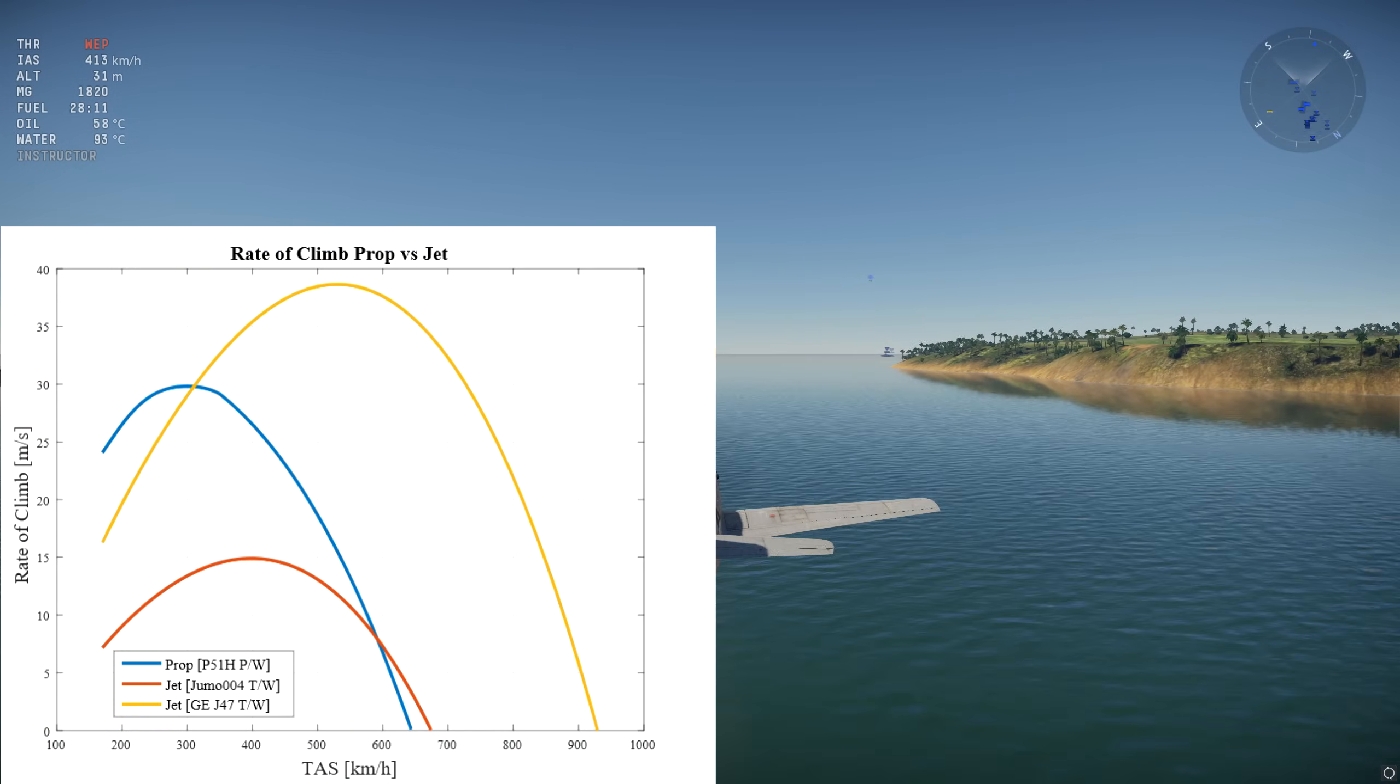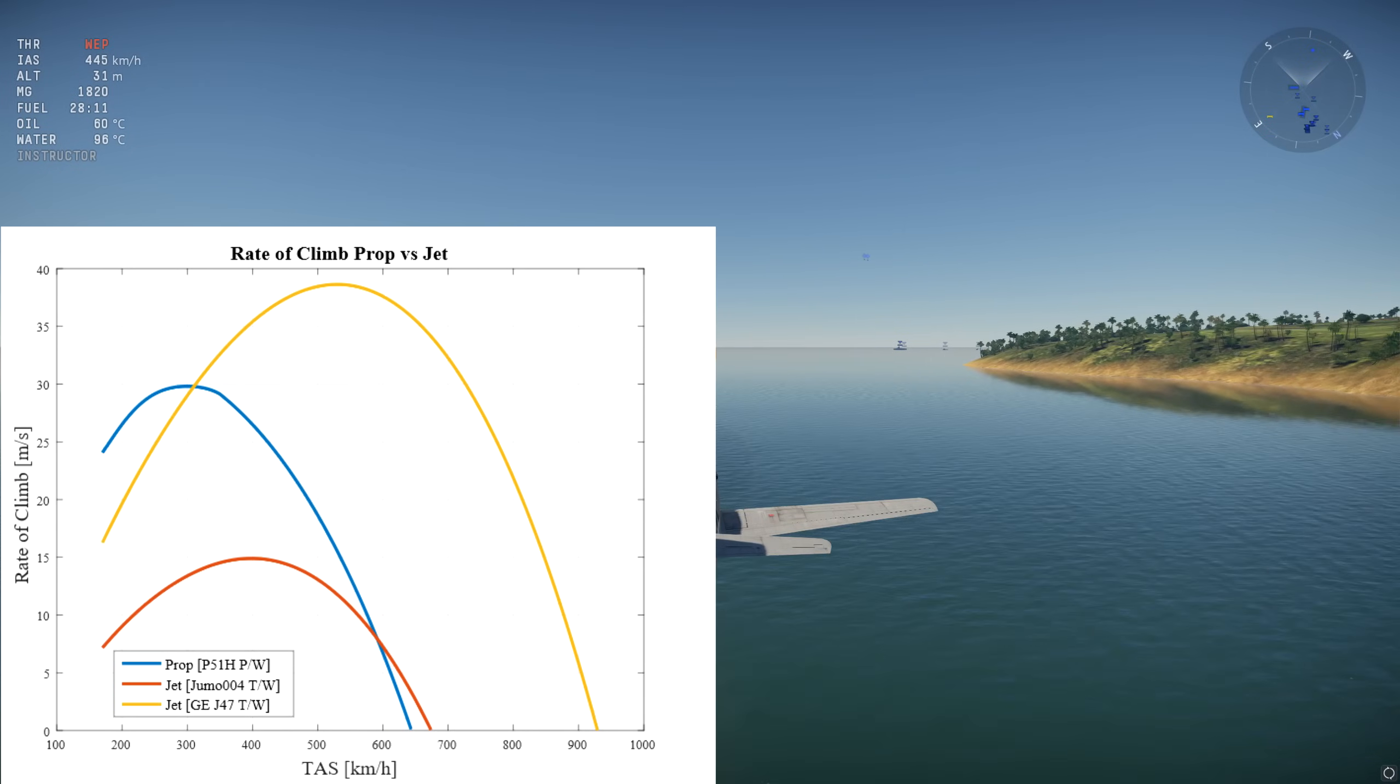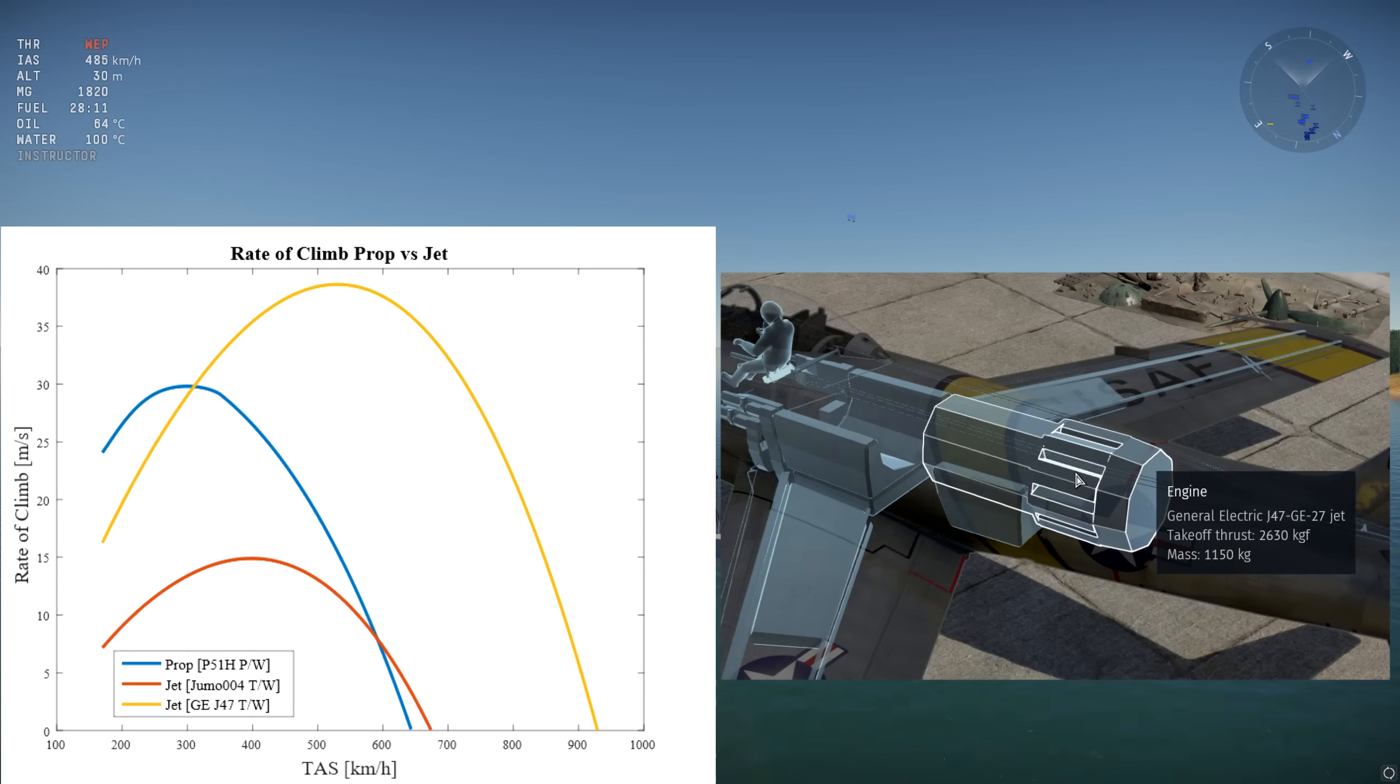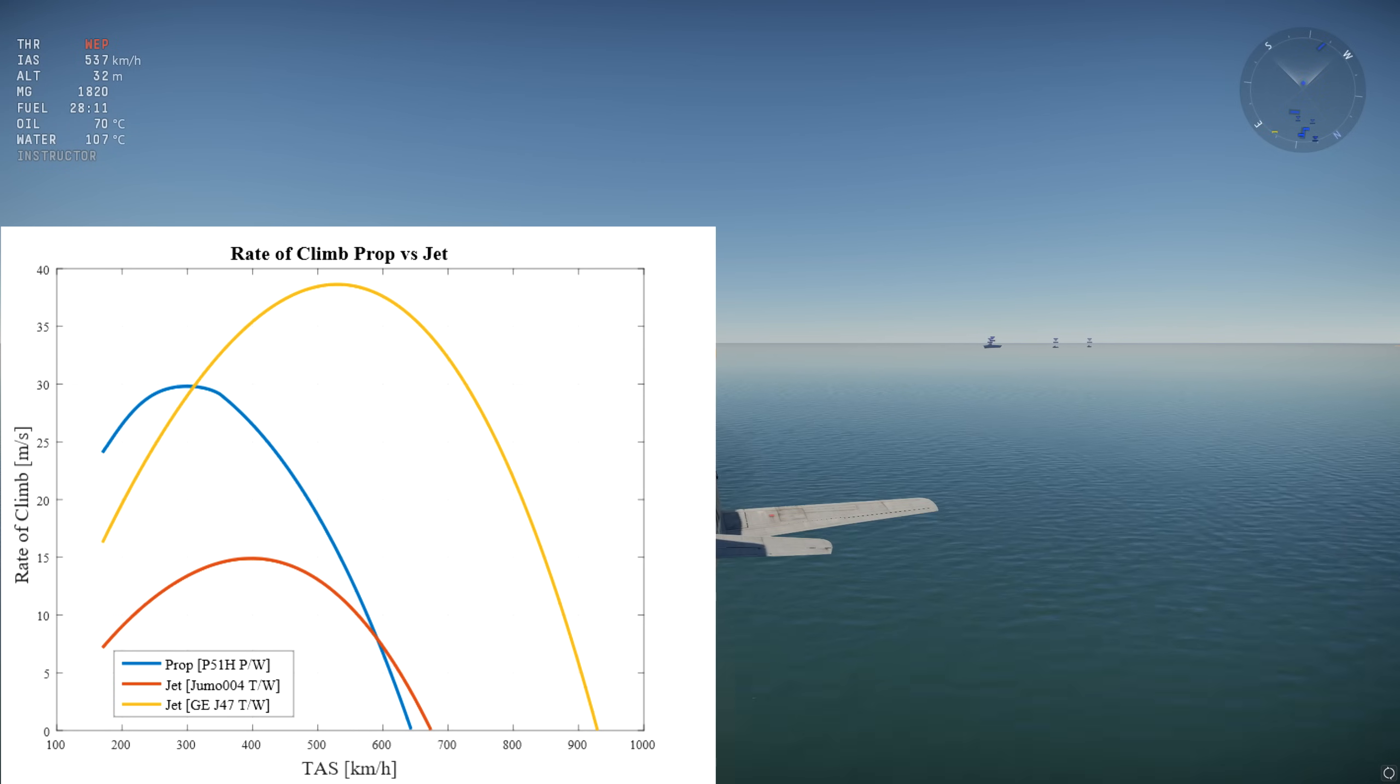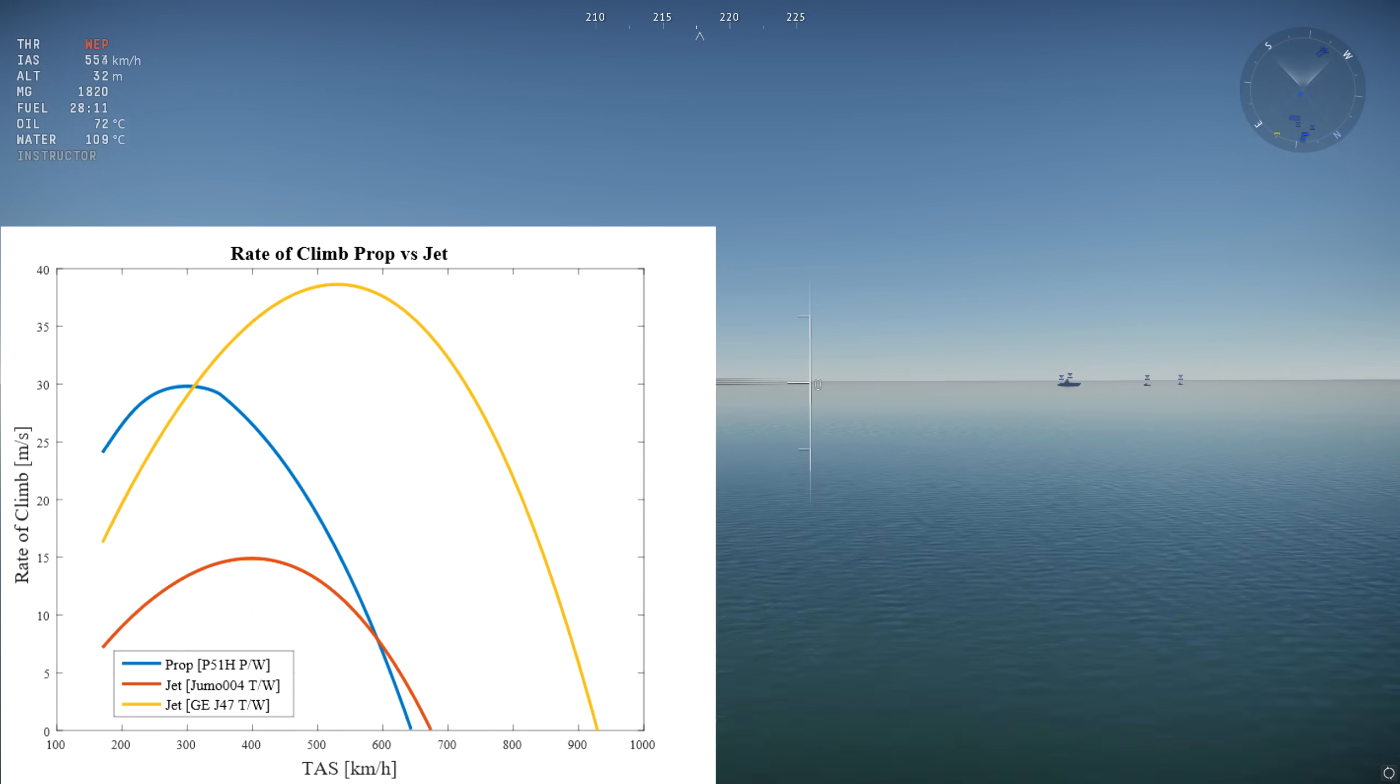This last graph shows the performance of the same typical World War II fighter if it were equipped with a jet engine with the same thrust to weight ratio as the GE J47 turbojet on the F-86 Sabre, a mere 5 years after World War II. Represented by the yellow curve, this next generation jet engine outstrips the performance of the best piston engine at all but the lowest speed. This made it clear that the jet engine was the future for fighter aircraft.